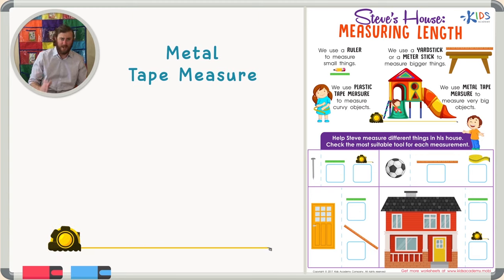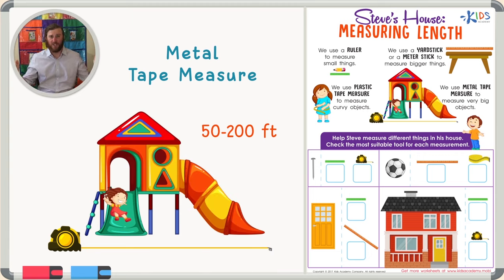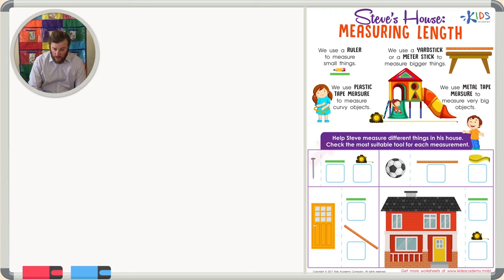The last measuring tool I'd like to teach you about is a metal tape measure. A metal tape measure is very different from a plastic tape measure — it can be from 50 to 200 feet long, meaning it can measure things like houses and cars. A metal tape measure is really big, for measuring things that other tools can't measure.